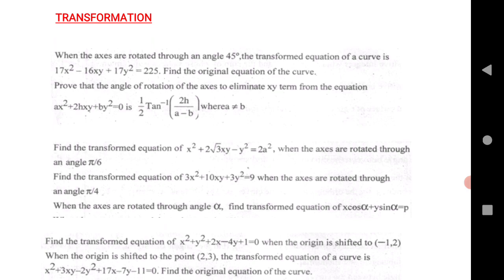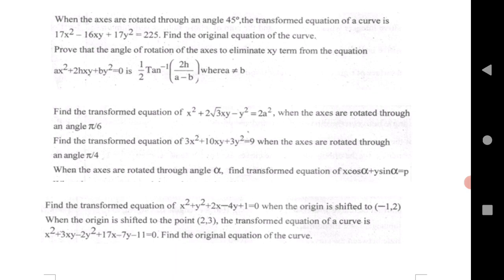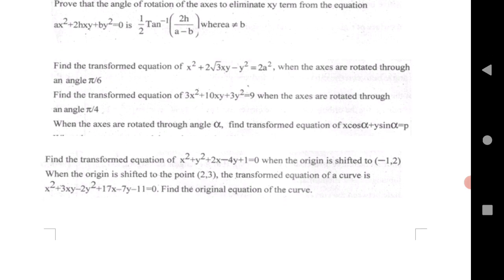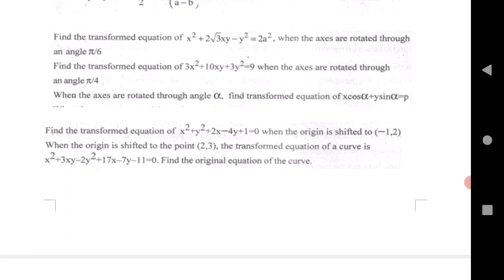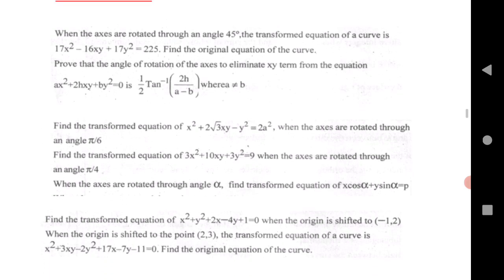When the axis rotates 45 degrees, you need to find out the original equations. Second is 1 by 2 tan inverse 2h by a minus b. Next is transform equation rotated through an angle pi by six, one question, pi by four is another question, and alpha. When the origin is shifted, find the original equation of the curve. This is an important question from transformation that will give you good marks.